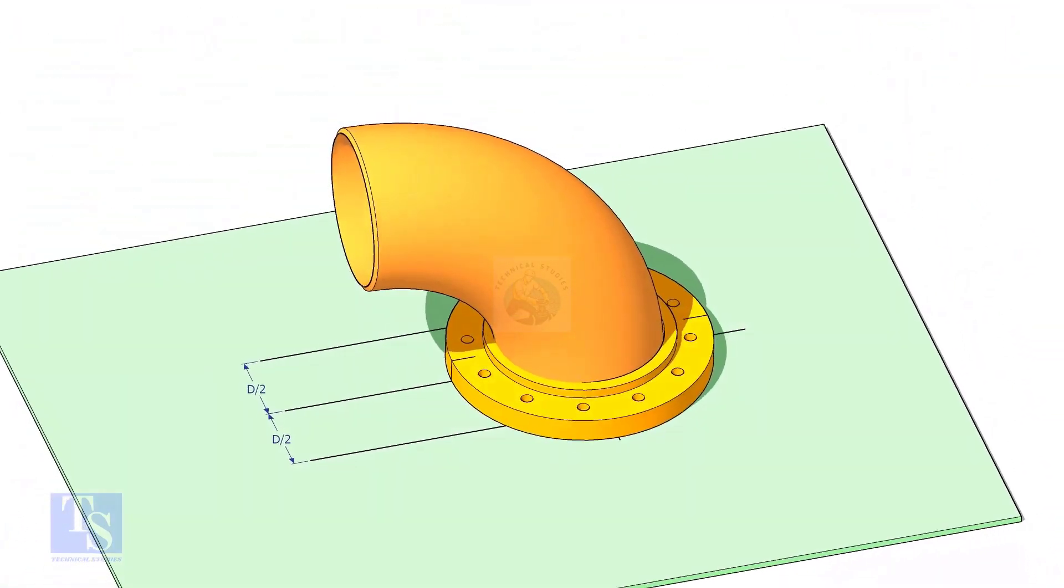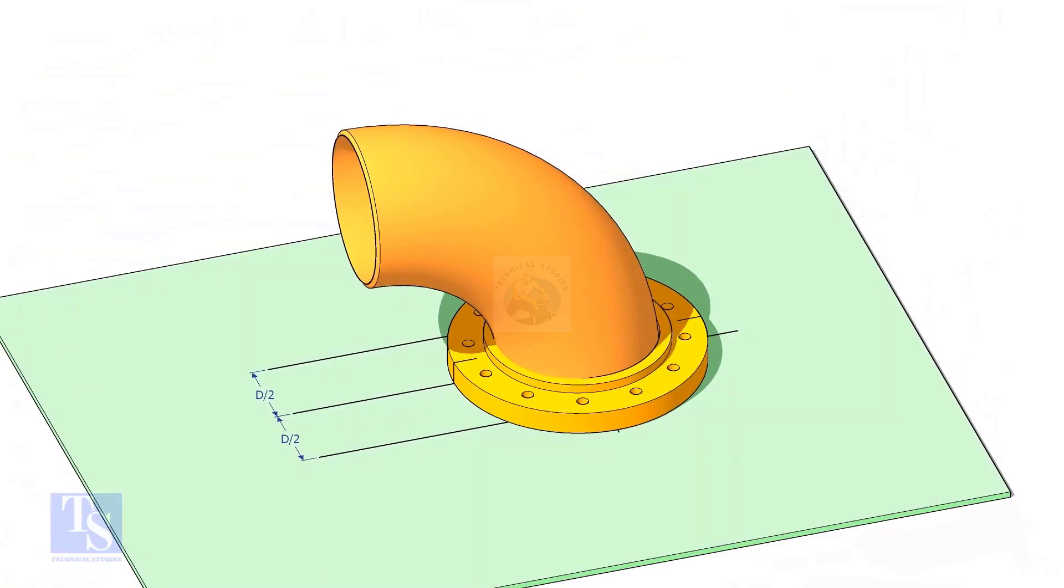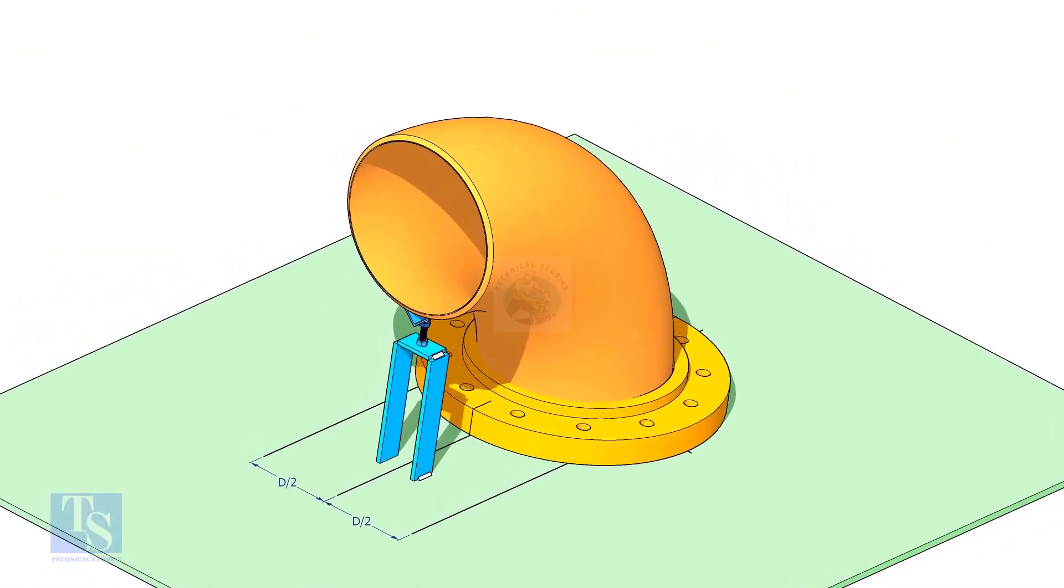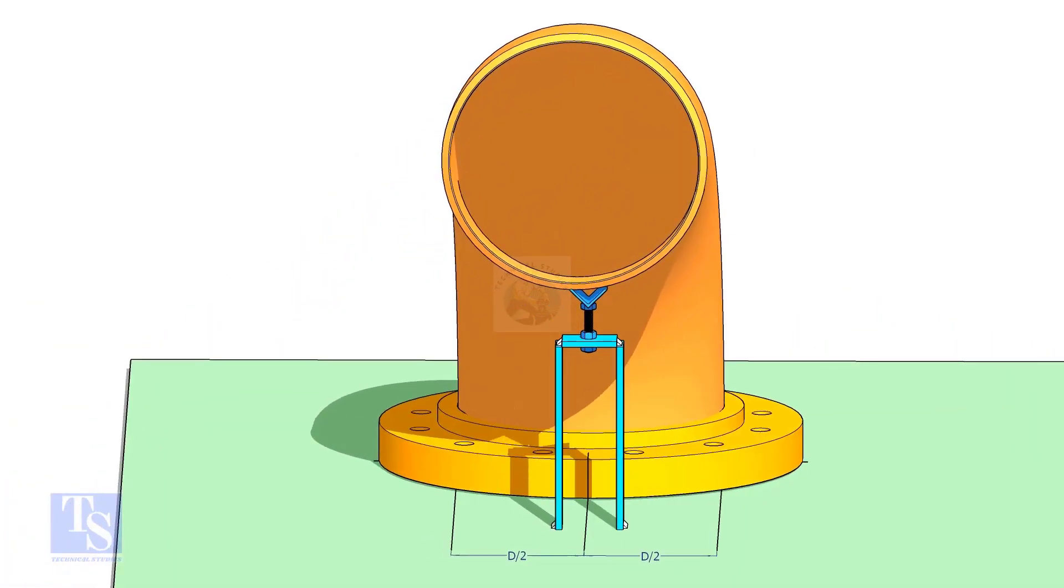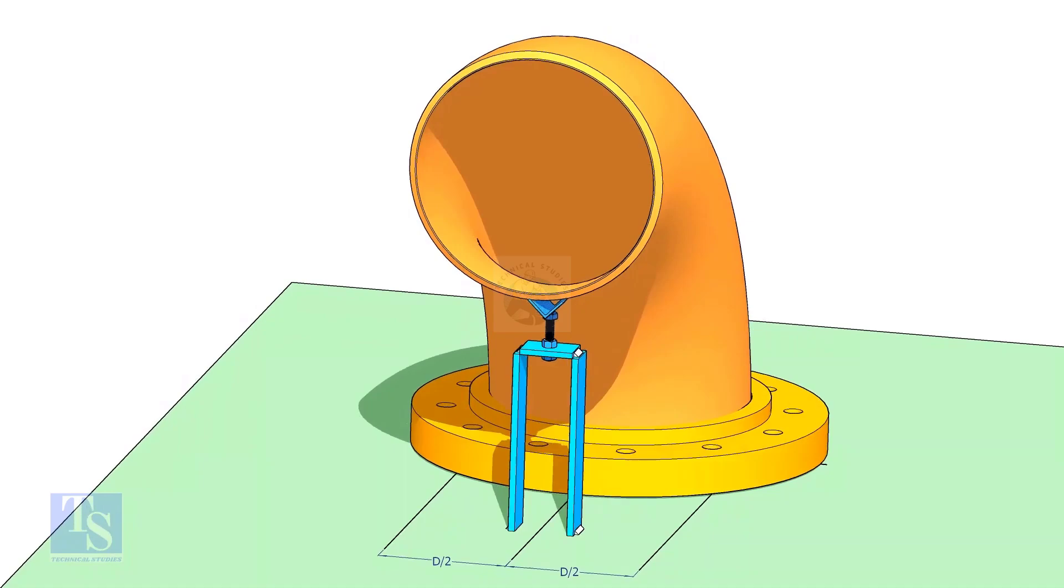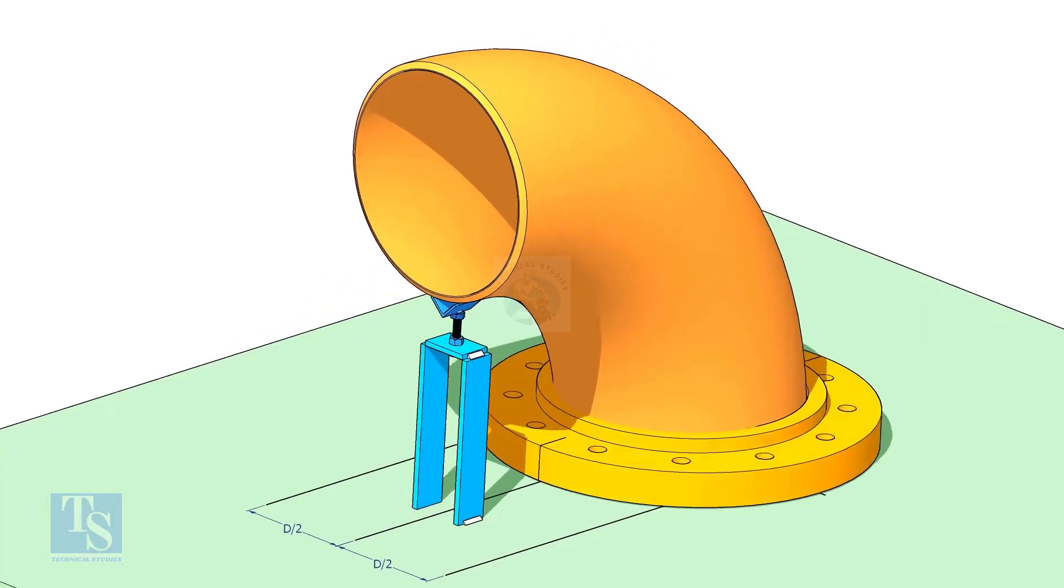Put the elbow in the flange. If required, tack weld the screw jack below the elbow face as shown. Adjust the height of the bolt and level the face of the reducer.